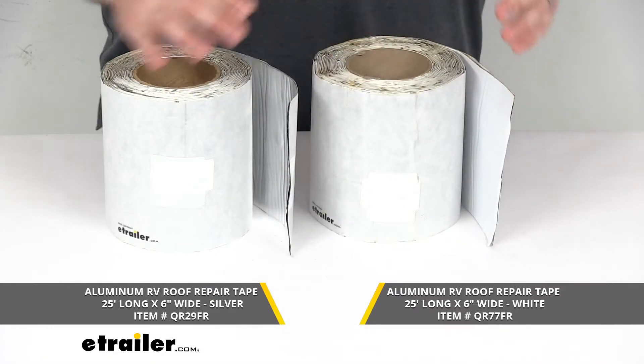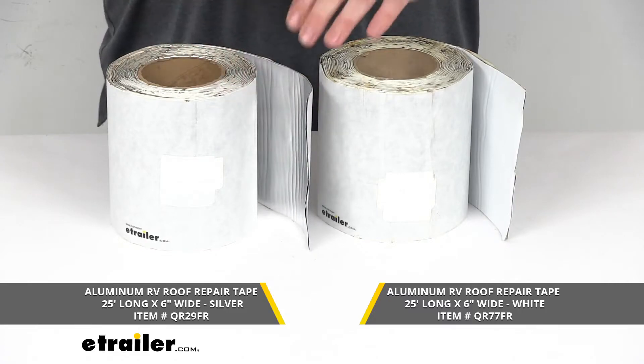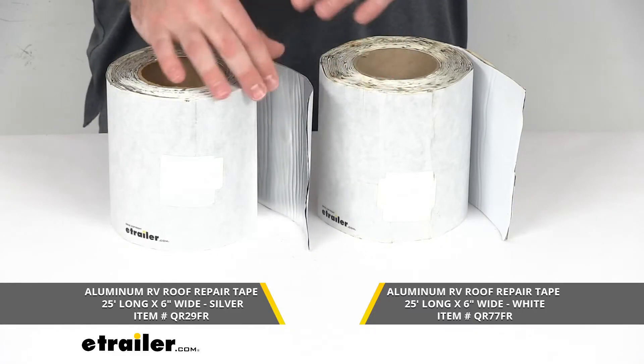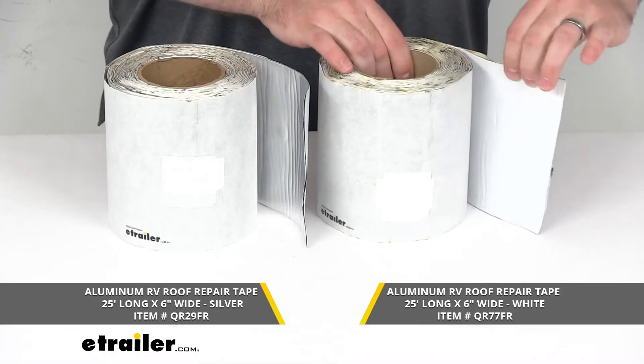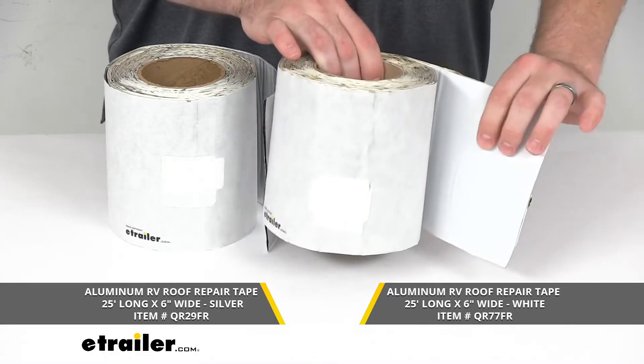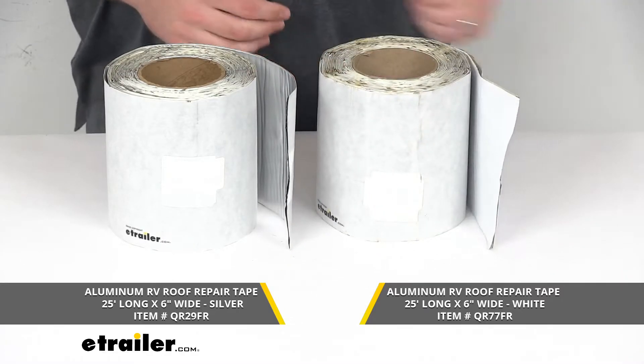So basically the color is the only difference between these. If you have a silver roof or you're wanting to put it on your flashings or something along those lines, that silver is an option. And if you have a white roof or your application is white, this one will probably be better for you. It will blend in, be less noticeable.